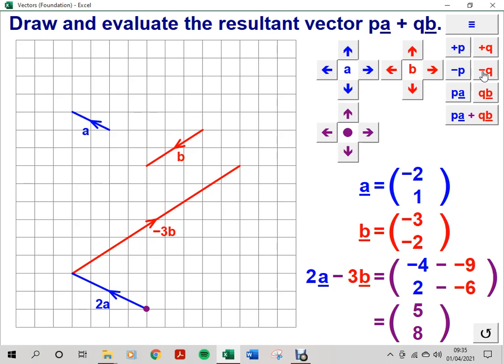So the resultant vector is this purple line starting from the purple point to the end point of the sum of the two scalar multiples of vectors A and B. And again, I've added an appropriate vector label.